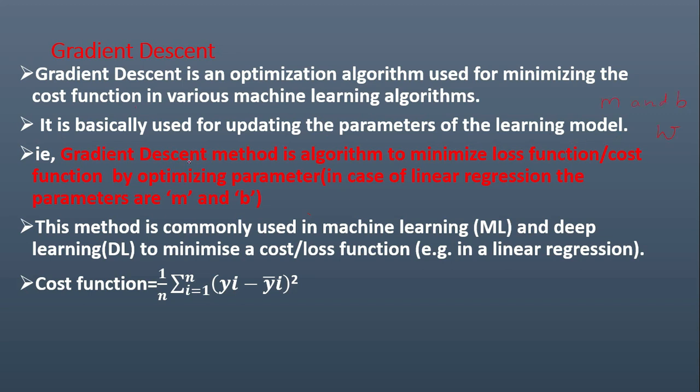That is, gradient descent method is an algorithm to minimize the loss function, cost function, or you can even say that error function, by optimizing the parameters. In case of linear regression, it is m and b. This method is commonly used in machine learning and deep learning to minimize the cost function or loss function.